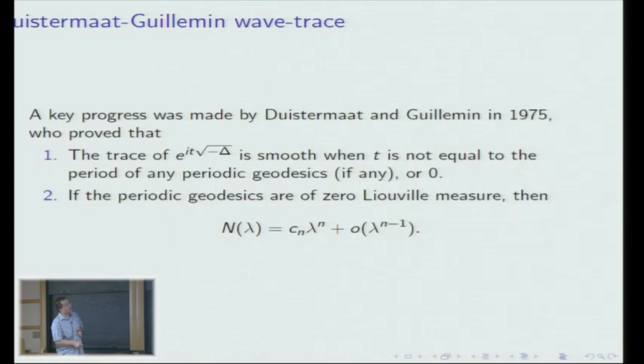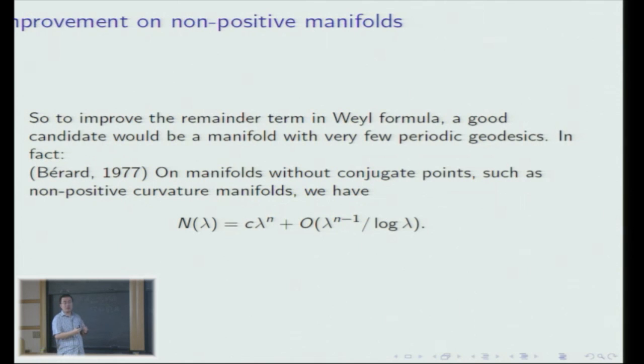This gives us the inspiration that if you try to improve the Weyl formula, you should start with a manifold with as few periodic geodesics as possible. A good candidate is a manifold without conjugate points. Recall that conjugate points are special points on a manifold with high concentration of geodesics. In 1977, Bérard proved that on manifolds without conjugate points — for example on manifolds with non-positive curvature or negative curvature — we have a logarithmic improvement.